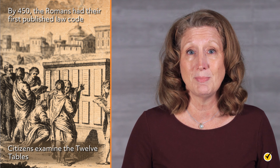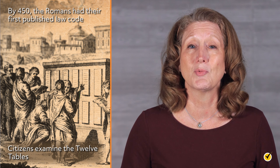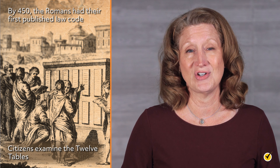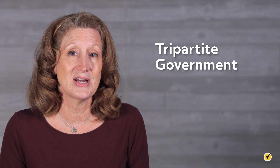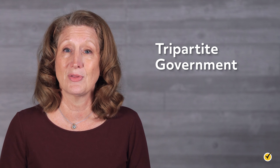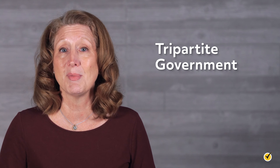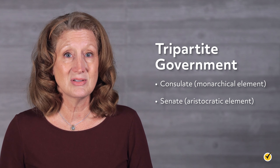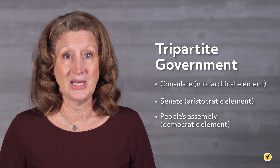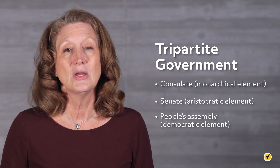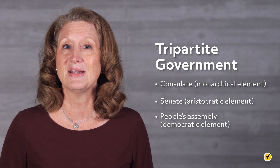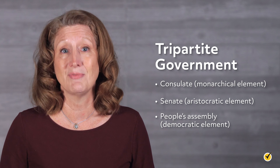By the latter part of the third century BC, the institutions and laws of the Roman Republic had reached a certain high point. The government was a mixture of tripartite authority, meaning there were three branches of authority, similar to the current United States government, which was largely based upon the Roman system. The three authorities were the Consulate, a monarchical element; the Senate, an aristocratic element; and the People's Assembly, a democratic element. When not leading Roman legions on military campaigns, the two Consuls governed from Rome as the ultimate heads of the government, superior to the vast majority of the other leaders.